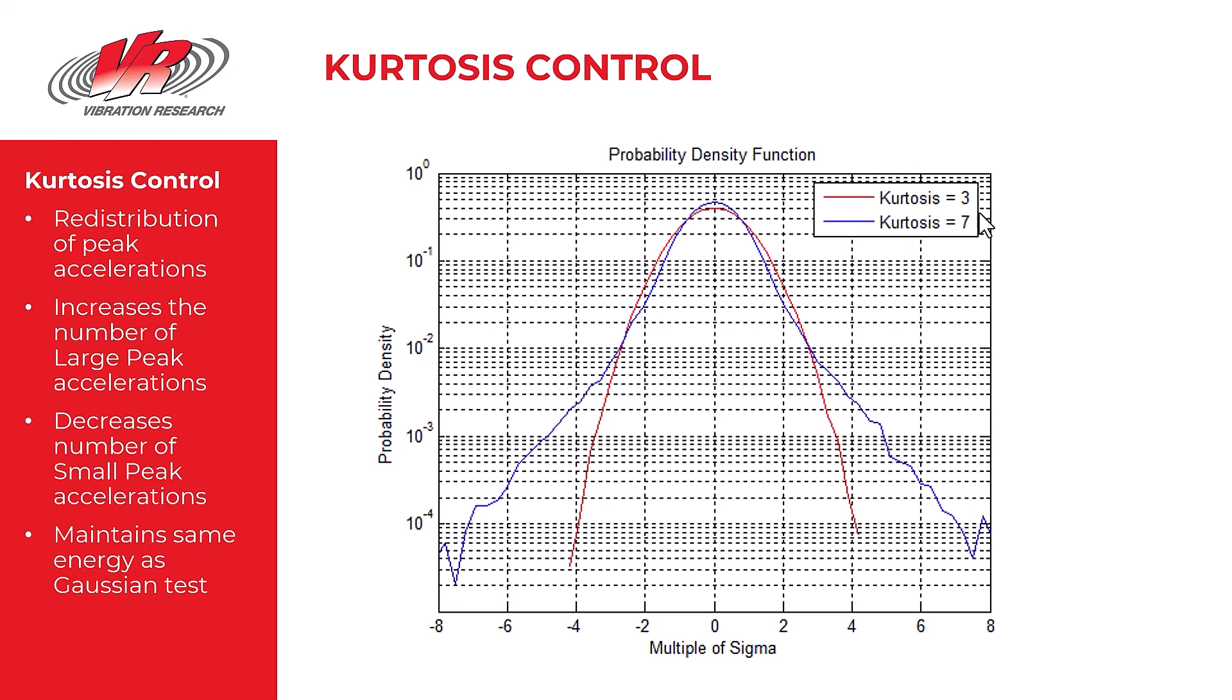If we increase that kurtosis to 7, you see the blue plot. And what you'll notice here are a few very interesting characteristics. The one probably that jumps out the most is the tails, what we call the tails of the probability density function. And they are extended, they are further out than the Gaussian.